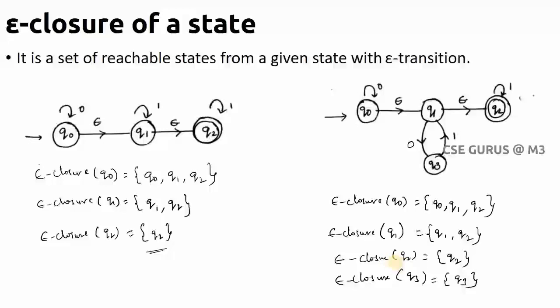So the e-closure of a state means all reachable states via epsilon transitions, and you must also include the state itself first. For example, for Q0, you include Q0 first, then Q1, then Q2. This is the concept of e-closure.